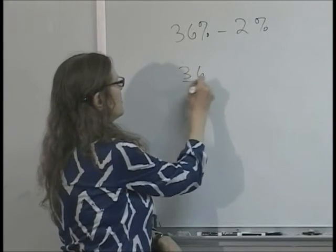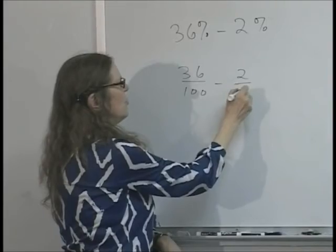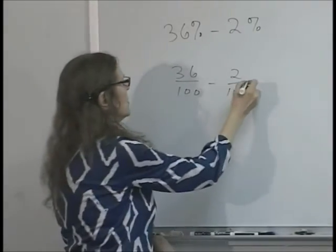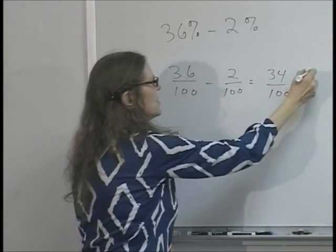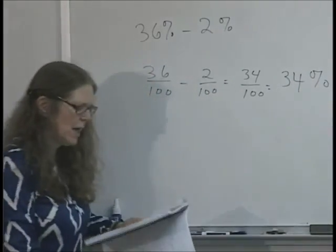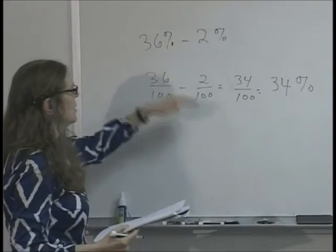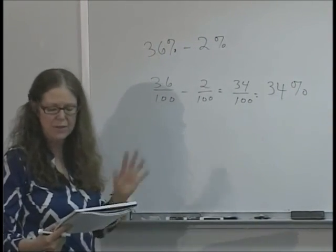Well, that would mean 36 percent is 36 hundredths, 2 percent is 2 over 100, because that's by the definition of what percent means. So this is 34 hundredths, which is 34 percent. So since percent means hundredths, you really wind up getting problems with the same denominator, and you just add or subtract the numerators, it's really not that difficult.